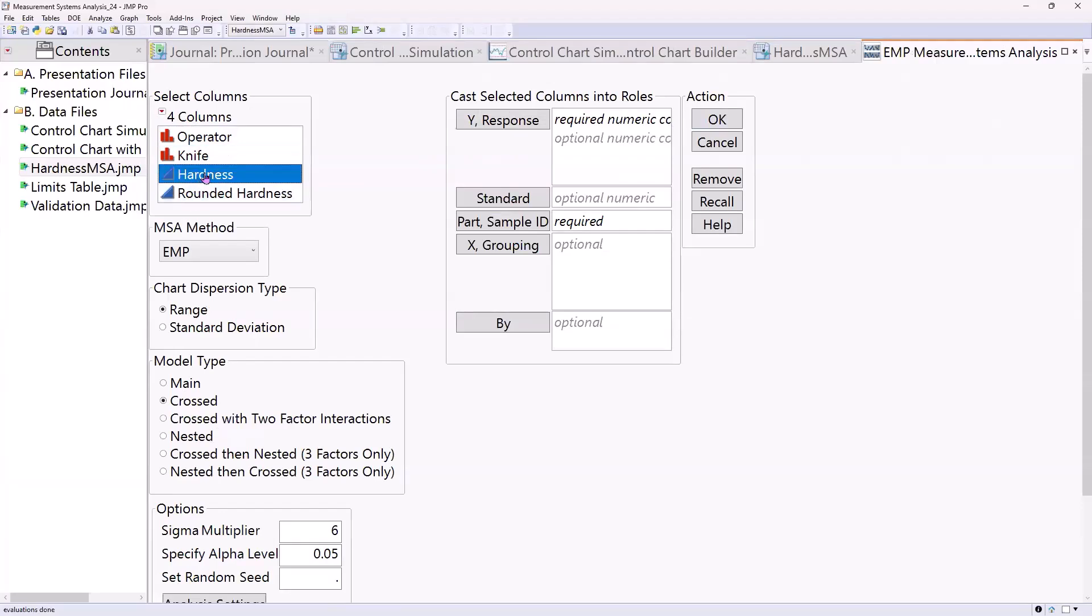Measurement systems analysis. We'll talk about that rounded here in just a second. So operator, the knife is the part in this case. Operator I'm using as a grouping. Just recognize that any source of variation should be included here. So if you have something beyond operator, if you have, like, lab, facility,